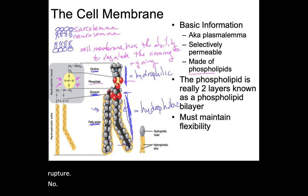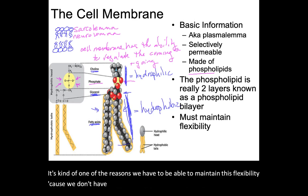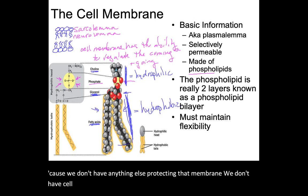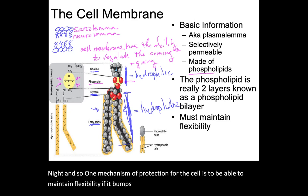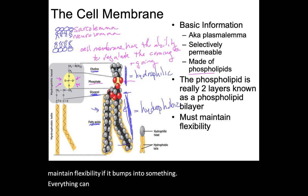We have to maintain flexibility because unlike plant cells, we don't have cell walls to protect the membrane. One mechanism of protection for the cell is to maintain flexibility — if it bumps into something, everything can shift and reposition within the membrane.